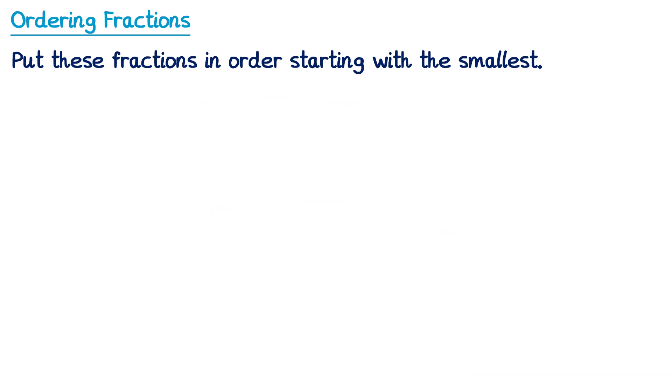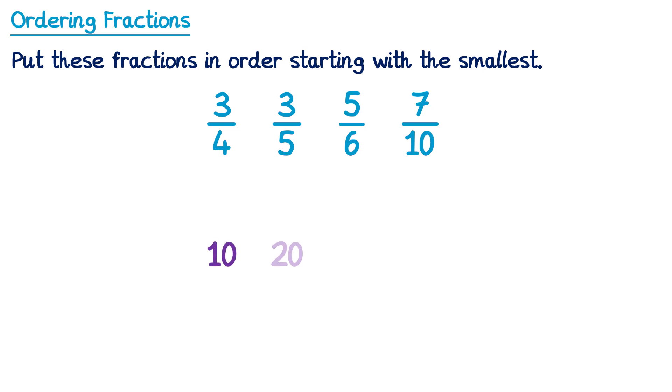Let's try a second example. Once again we're looking for a common multiple of all of the denominators: 4, 5, 6, and 10. I'd advise writing out the times table for the biggest number, so 10: 10, 20, 30, 40, and so on. Starting with 10: 5 goes in and 10 goes in, but 4 and 6 do not, so 10 can't be the denominator. What about 20? Well 4, 5, and 10 go into 20, but 6 doesn't, so we can't use 20.